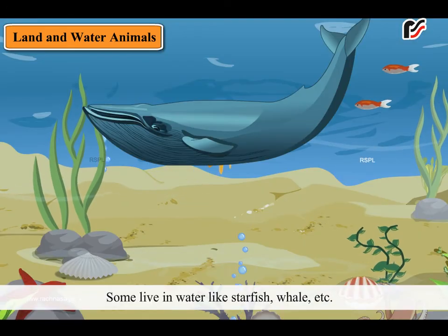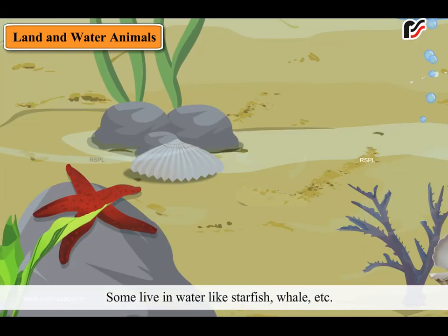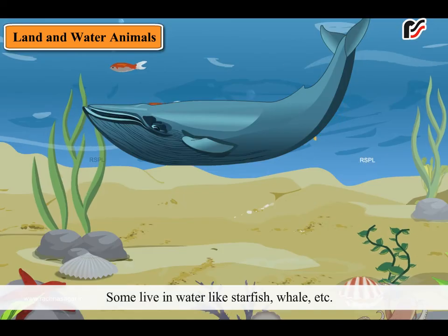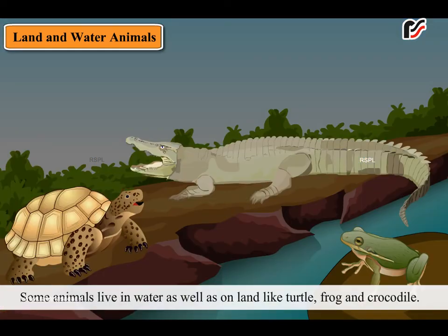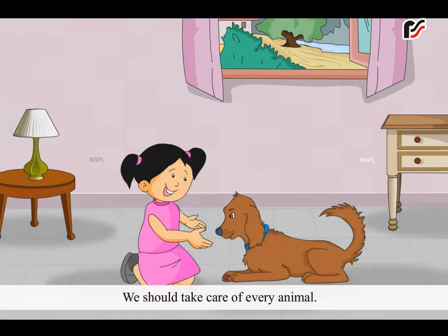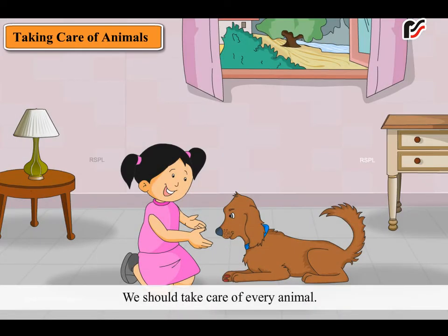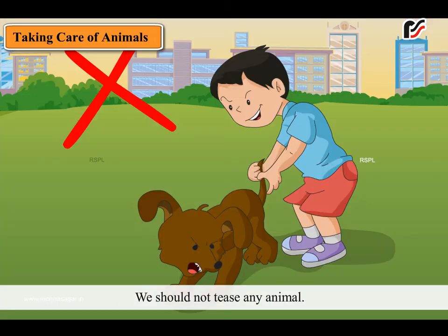Some live in water like starfish, whale, etc. Some animals live in water as well as on land like turtle, frog and crocodile. We should take care of every animal. We should not tease any animal.